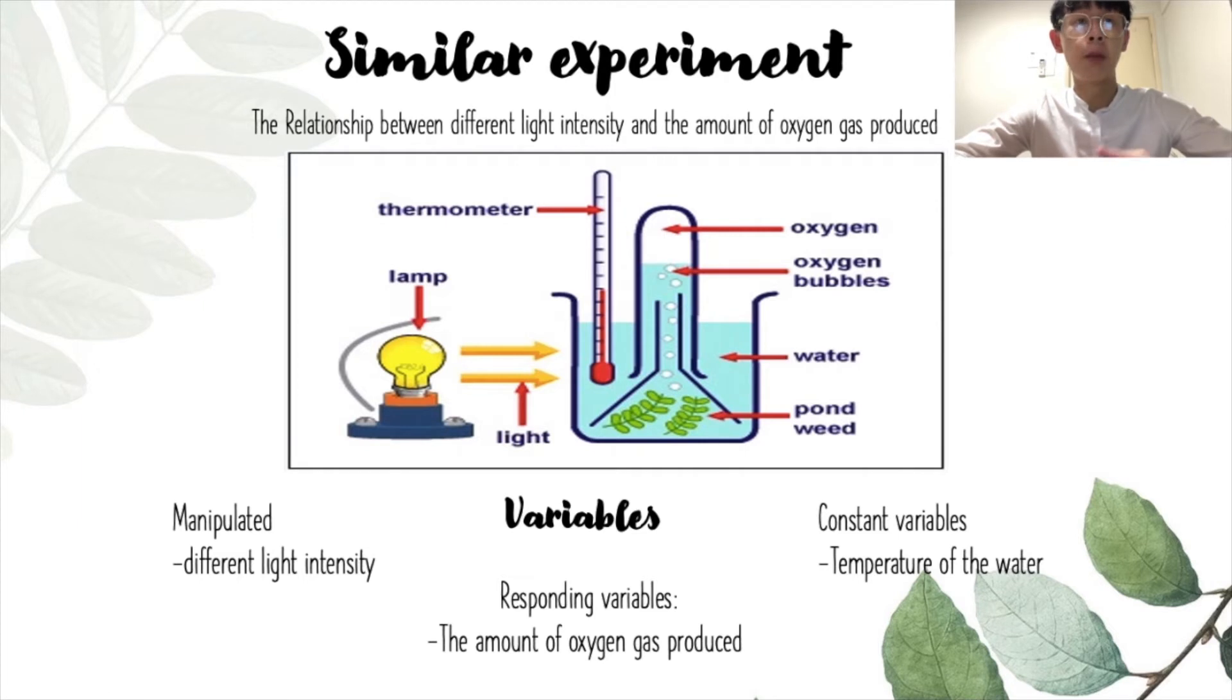The title of this similar experiment is called the relationship between different light intensity and the amount of oxygen gas produced. The manipulated variables in this similar experiment is same as our experiment, that is the different light intensity. But there are differences on the constant variables and the responding variables between our experiment and this similar experiment. The constant variables in this experiment is the temperature of water. And the responding variables in this experiment is the amount of oxygen gas produced. Although there are similarities and differences between these two experiments. But both of the experiments actually carry out the same objectives, which is to determine the rate of photosynthesis with different light intensity.